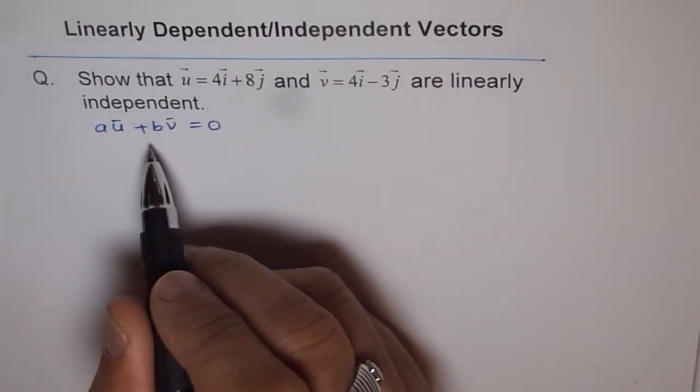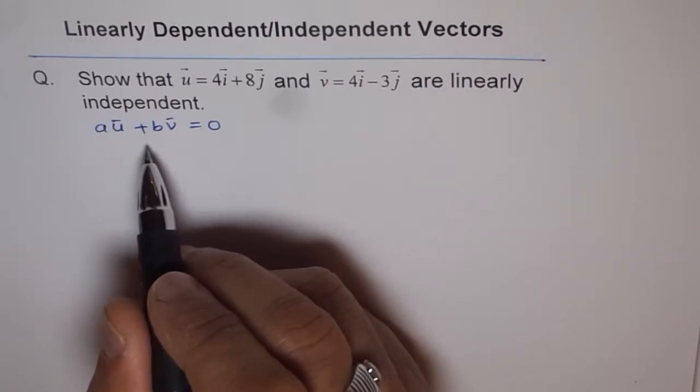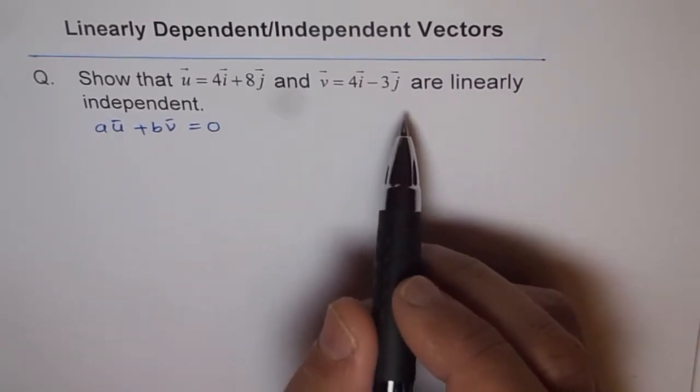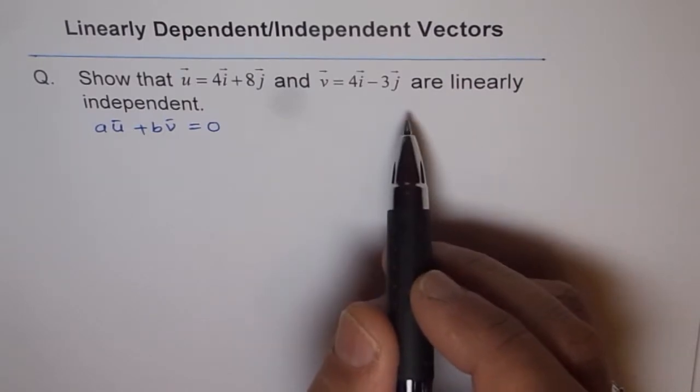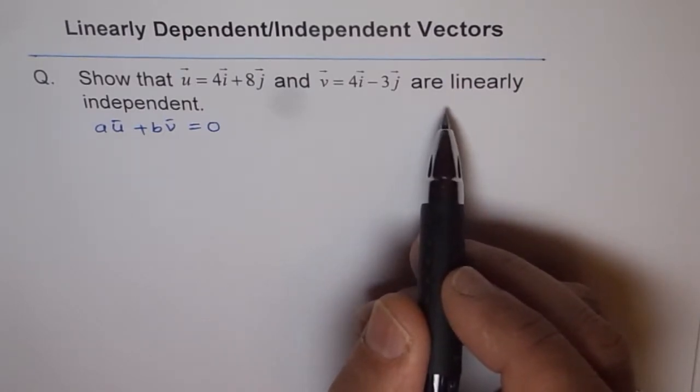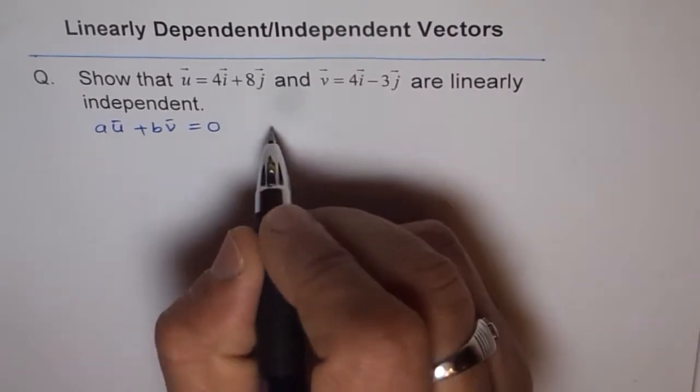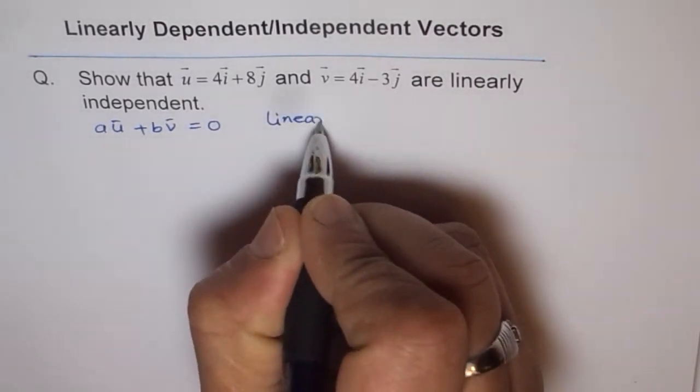So that is what we have. Therefore, in such questions where you have to prove that something is linearly dependent or independent, the starting point is linear combination. So start with linear combination.